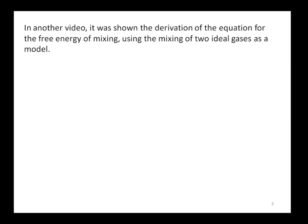In another video, it was shown the derivation of the equation for the free energy of mixing, using the mixing of two ideal gases as a model. We have discussed in detail that delta G is always a negative number. That is because ln x_A and ln x_B are negative numbers. So we have a spontaneous mixing when we have two gases.